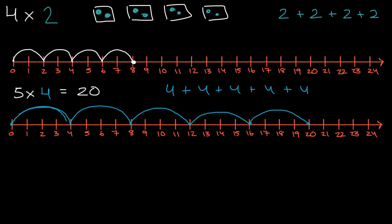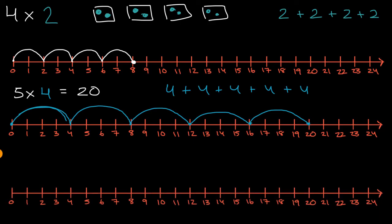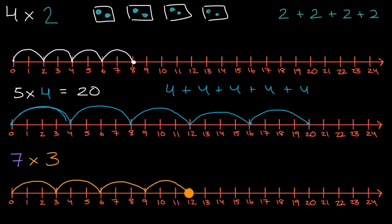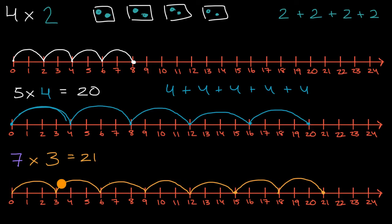Let's do one more. I'm going to have a number line and think about what it would mean to say seven times three. We could view that as seven hops of three starting at zero — seven equal hops: one, two, three, four, five, six, and seven. We end up at 21, so this is equal to 21. You could also view this as we took seven threes and added them together, and skip counting: zero, three, six, nine, 12, 15, 18, and 21.